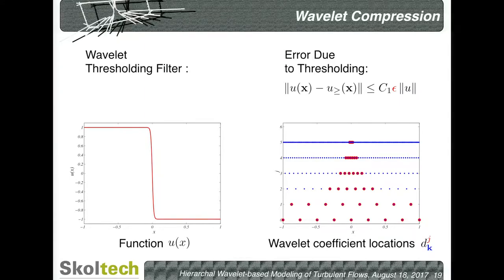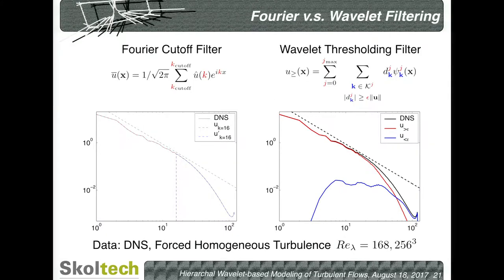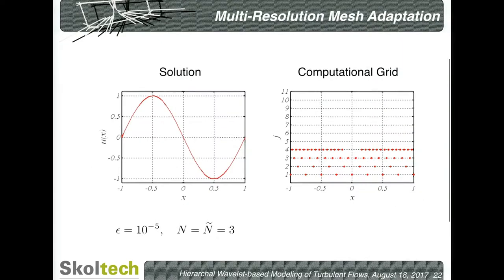Comparing wavelet decomposition with Fourier: Fourier has modes, wavelets have bands, because they are localized in wavenumber space but not as delta functions. If you do a Fourier cutoff filter — keeping low wavenumber modes and throwing out high frequency modes, as done in LES — you apply a sharp cutoff. With wavelet thresholding, you keep the most energetic, most dominant modes marked in red, and throw out the noise or less energetically coherent structures.